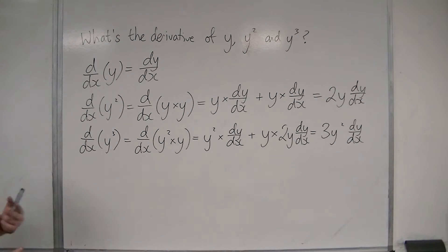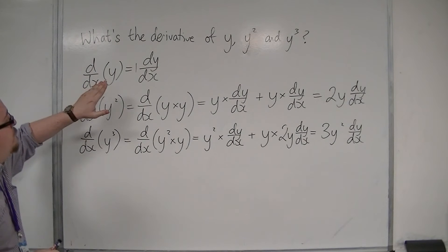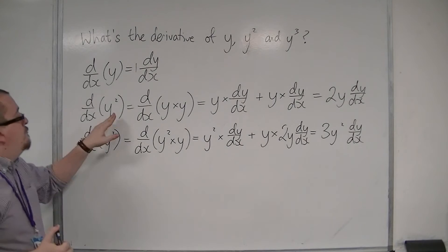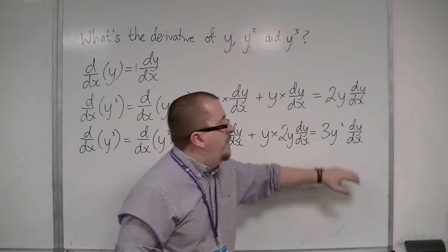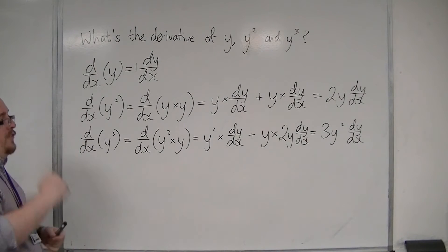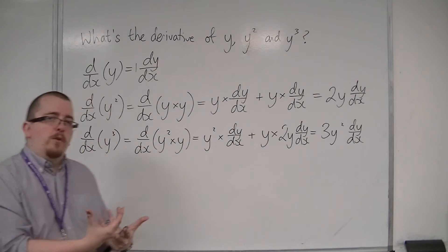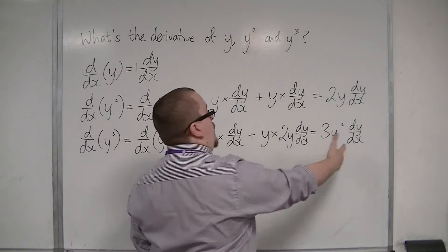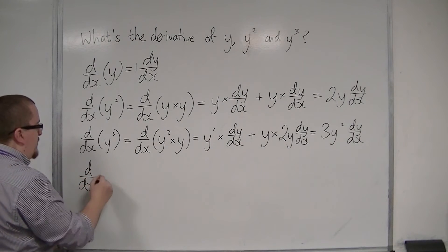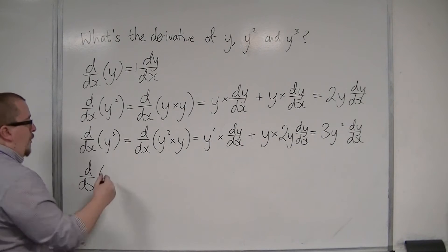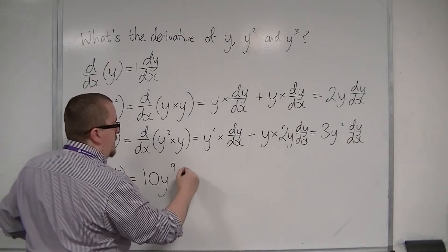Now we should start to see a pattern. If I put a 1 there: differentiating y gives 1 dy/dx, differentiating y squared gives 2y dy/dx, and differentiating y cubed gives 3y squared dy/dx. What appears to be happening is that I differentiate it as normal — the 3 comes down to the front, I take 1 off the power to get 3y squared — and then stick a dy/dx on the end. So I would expect that d by dx of y to the power of 10 would be 10y⁹ dy/dx.